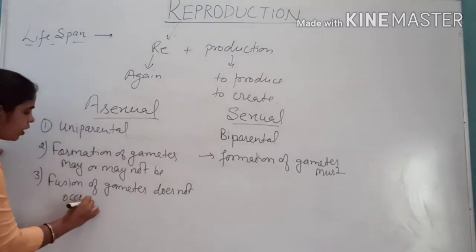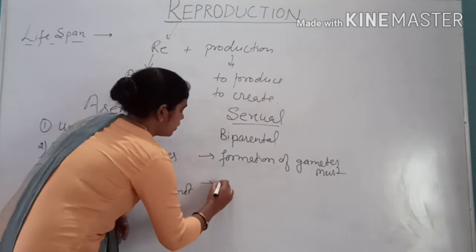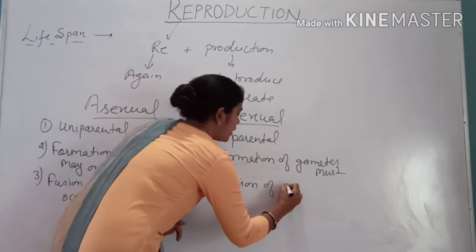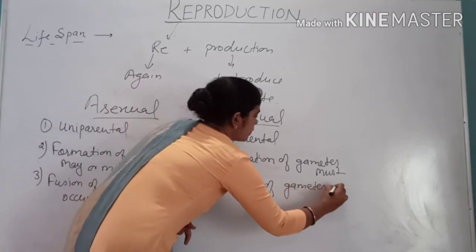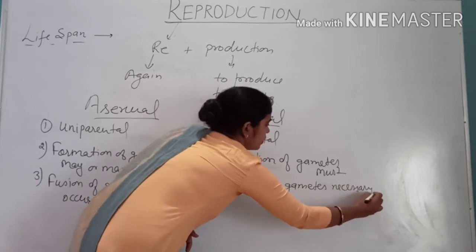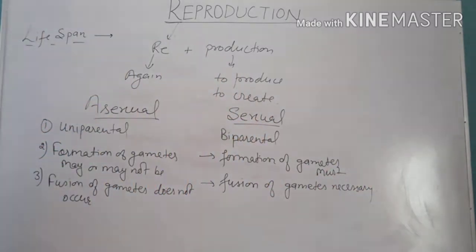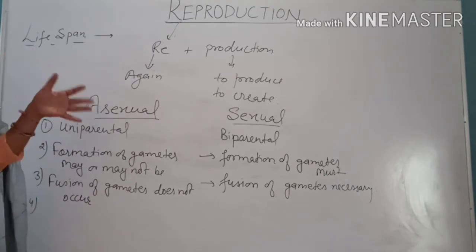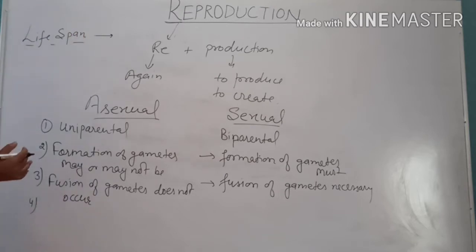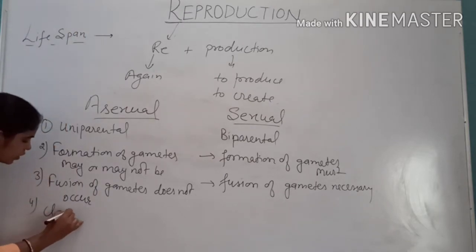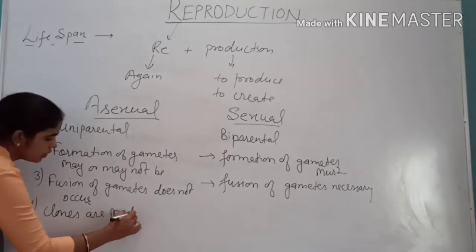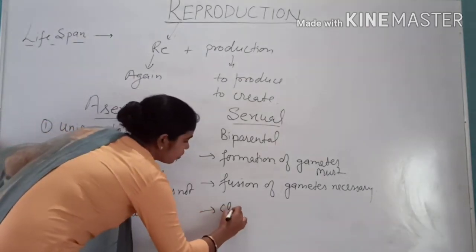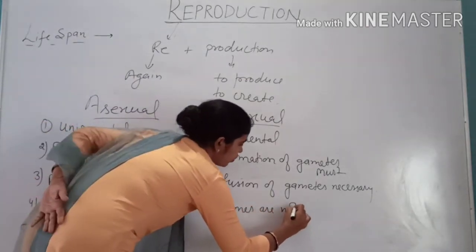While in sexual reproduction, formation and fusion of gametes are both necessary. In asexual reproduction, the offspring produced are similar to each other as well as similar to their parents, so we can call them clones. Clones are produced in asexual reproduction, but not in sexual reproduction.